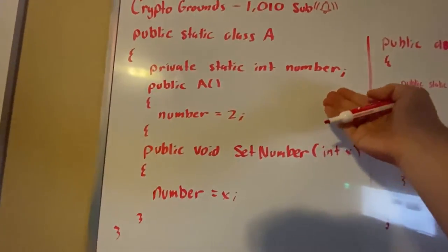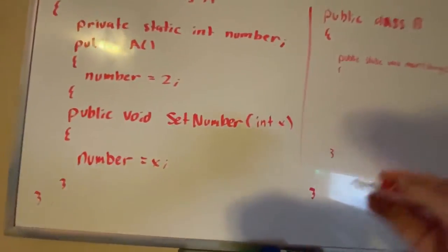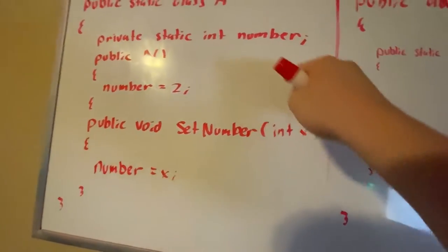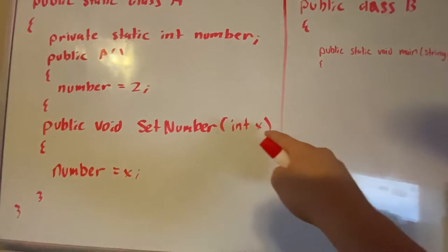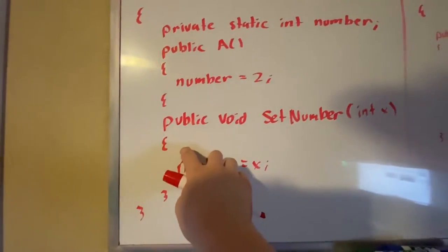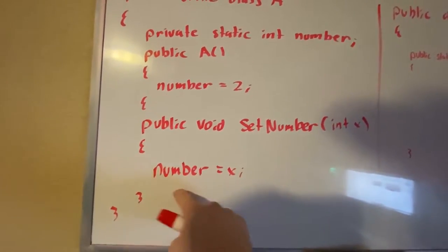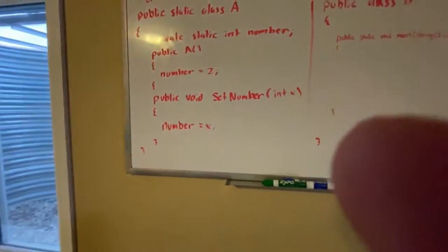In here, this is pretty easy because basically we just do whatever you want to set: number equals x. Now if you have another variable, you can always set more than one variable. Let's say you want to set numbers and you have number1, number2. You can do int x and int y, and you can change number1 equals x, number2 equals y. It doesn't just have to be one number.